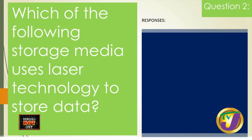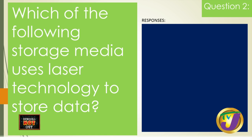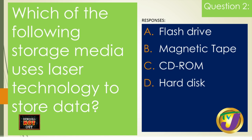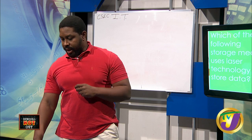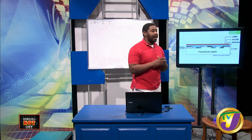Question two: which of the following storage media uses laser technology to store data? Is it A) flash drives, B) magnetic tape, C) CD-ROMs, or D) hard disk? Laser has to deal with light. The only one that works with light would be CD-ROM — everything else is magnetic media. So CD-ROMs are the ones that work with laser light.